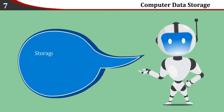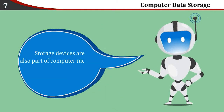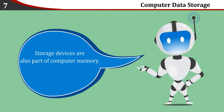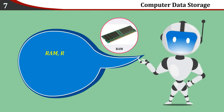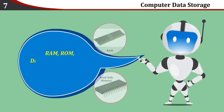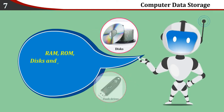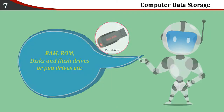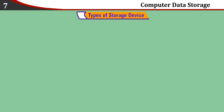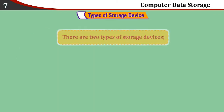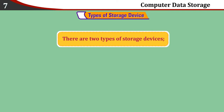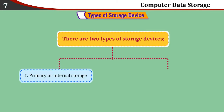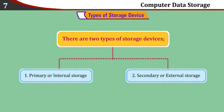Storage devices are also part of computer memory. Examples include RAM, ROM, disks, and flash drives or pen drives. There are two types of storage devices: Primary or Internal Storage, and Secondary or External Storage.